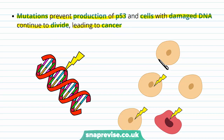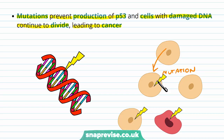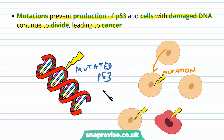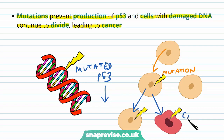Normally if a healthy cell underwent a mutation, the p53 would help clear it up, kill the cell off, or stop the cell cycle until it's been cleared. But if we have mutated p53, then p53 won't be expressed, and therefore the cells will keep dividing and eventually lead to cancer.